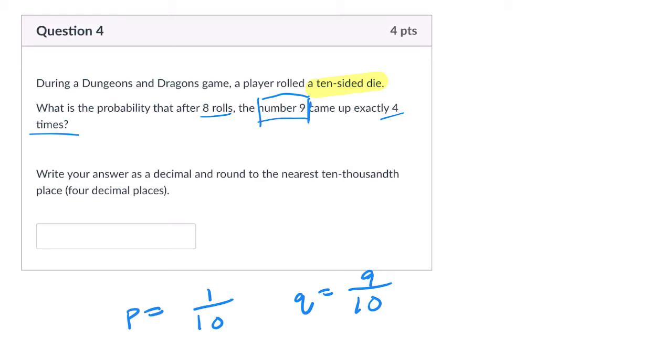So here we're getting exactly 4 9s. It comes up exactly 4 times. So we're getting a situation where we have 9, 9, 9, 9, and then basically not 9s. How many times are we rolling it? 8 rolls. We'll have 1, 2, 3, and 4 non-9s.